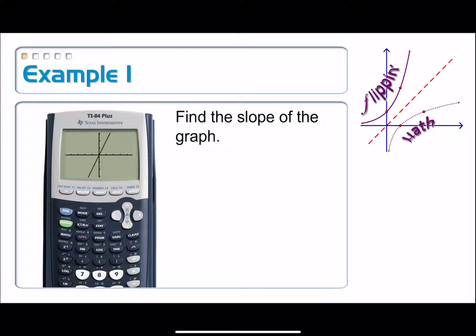differentiability and taking a derivative is tied to local linearity and slope. So speaking of slope, let's find the slope of this graph on example one. Now, I'm not trying to trick you this time. What you see is what you get. It looks like a line. It truly is a line.